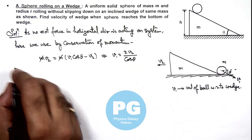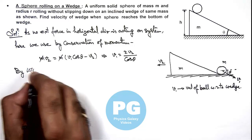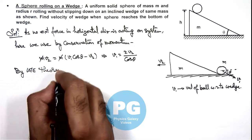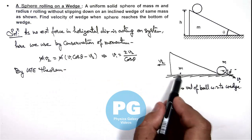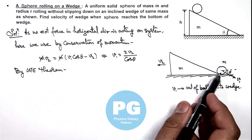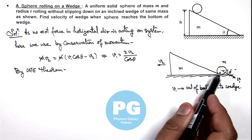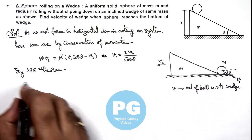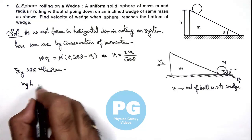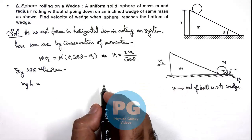And we can write by work energy theorem, the kinetic energy gain in wedge as well as in that of ball is due to the work done by gravity. So here work done by gravity is mgh, and that should be the gain in kinetic energy.